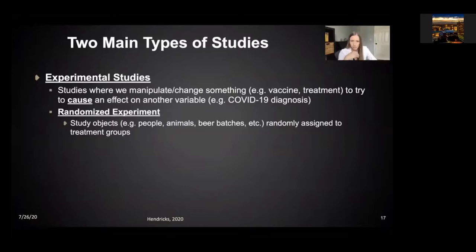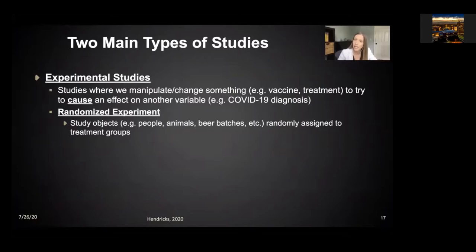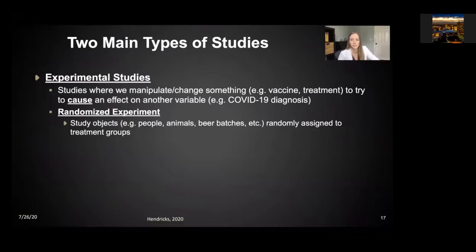Experimental studies are studies where we manipulate or change something — maybe I am going to control who gets a vaccine or who gets a treatment — because I want to try to cause an effect on another variable, like COVID-19 diagnosis. If I control who gets the vaccine, do I see that people who get a vaccine are less likely to be diagnosed with COVID-19? Within experimental studies, we have something called a randomized experiment, where we assign study objects — people — randomly to treatment groups. Randomized experiments, and specifically randomized clinical trials for COVID-19 treatments or vaccines, are very special, and from these we can make causal conclusions.